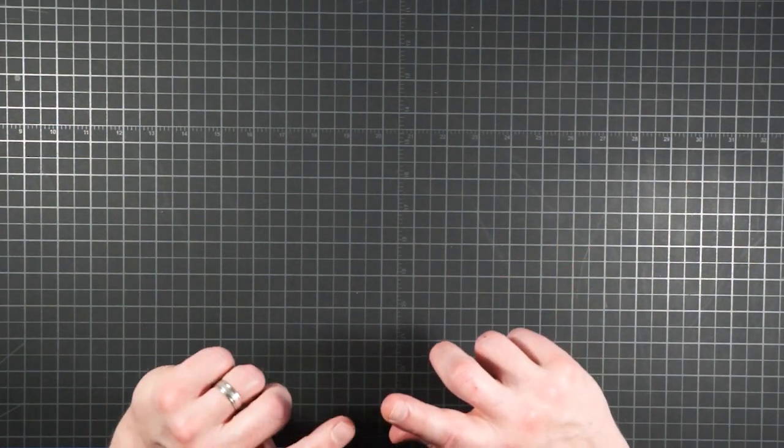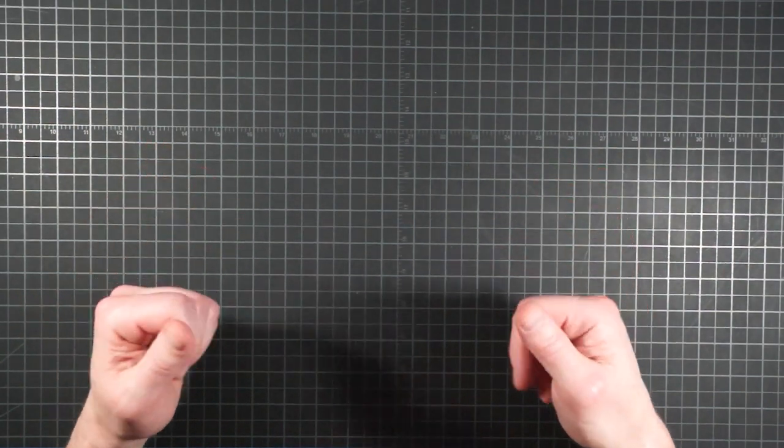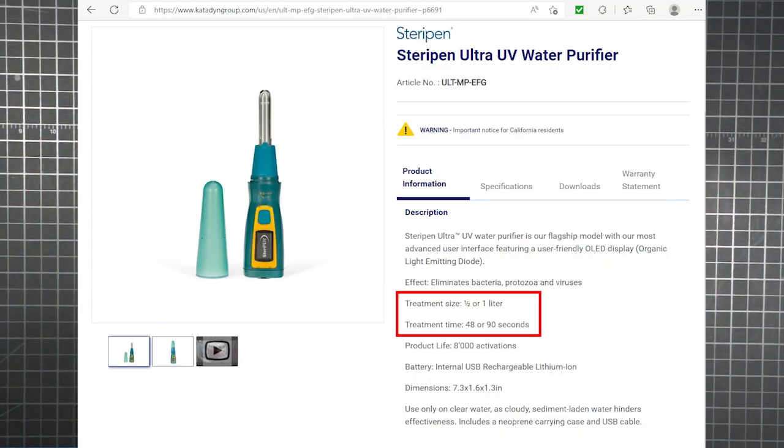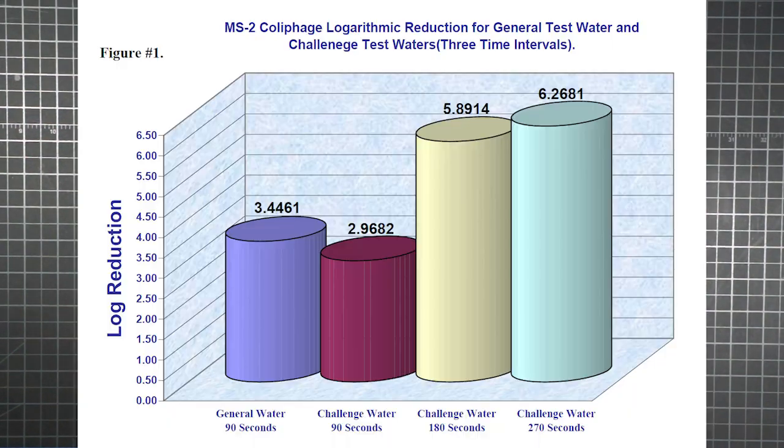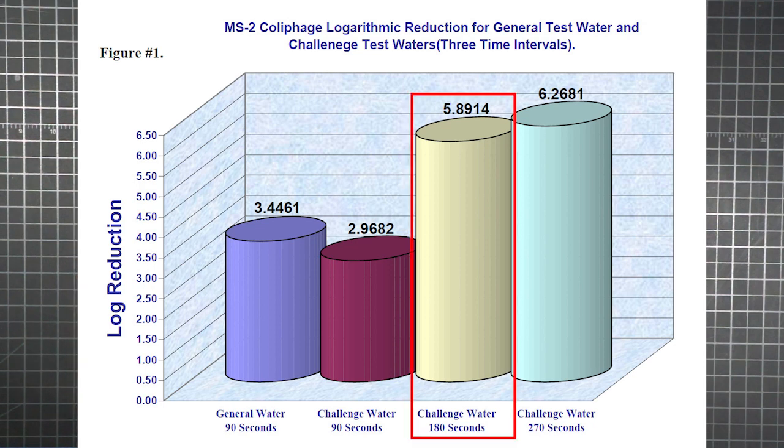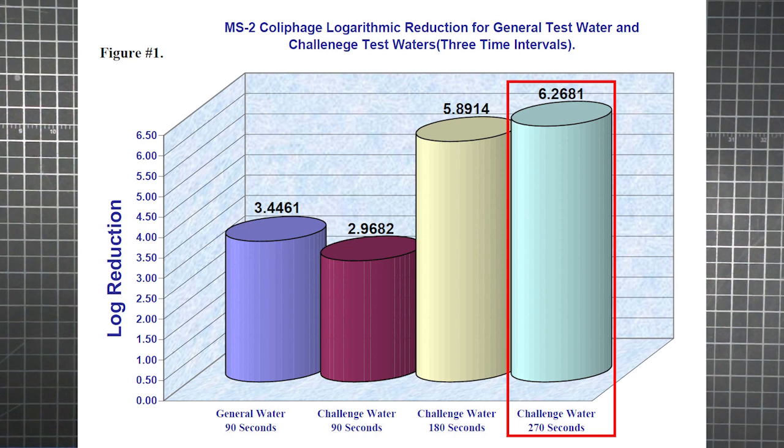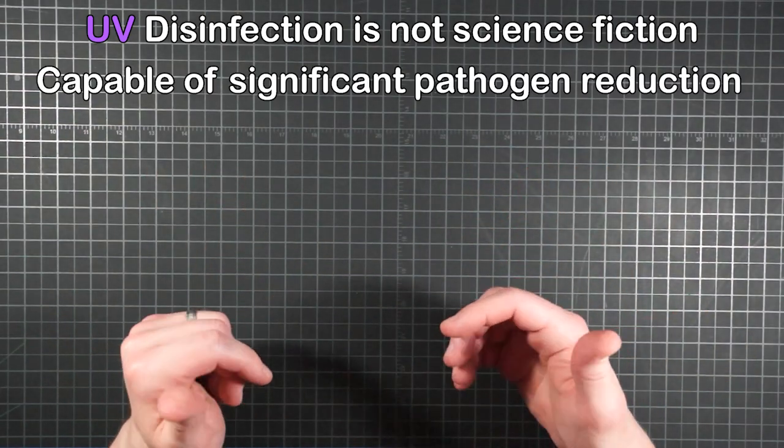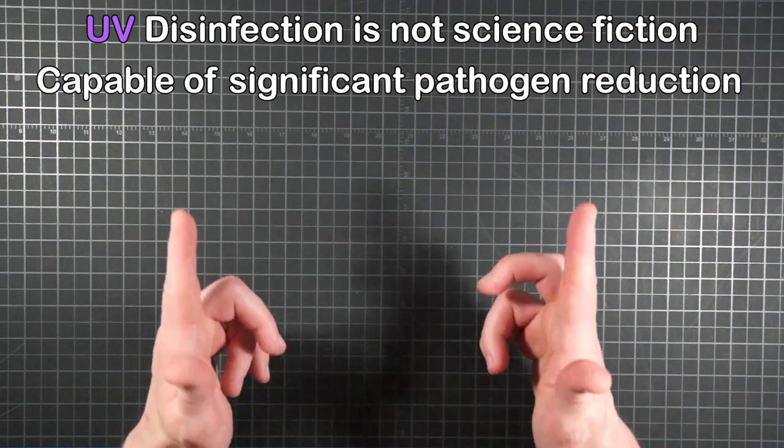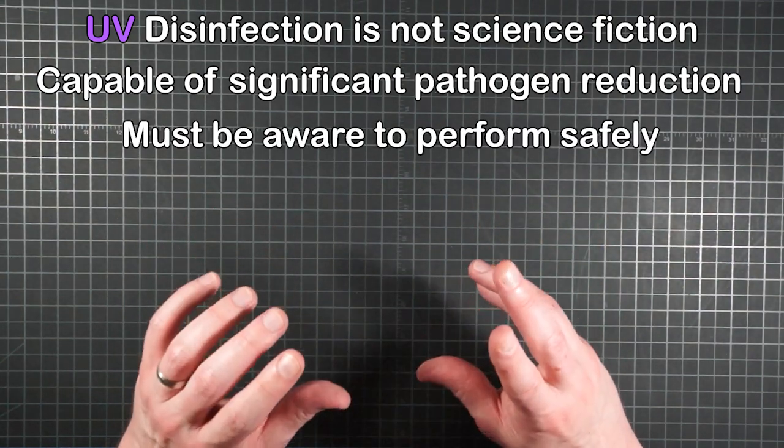Fortunately, there's a fairly easy way to compensate for potentially inadequate reductions. Zap it again. Just because the manufacturer's instructions prescribe one 90 second treatment per liter doesn't mean you can't light it up a second time or even a third. Perhaps recognizing that the results weren't that great, the lab report also shows log reductions for two treatments at 180 seconds of irradiation and for three full cycles with a total of four and a half minutes under the lamp. And as you can see, they were eventually able to exceed six logs of inactivation, even in the murkier challenge water. Though for me so far, the takeaways are UV disinfection is not science fiction. The technology is real and it's capable of significant pathogen reduction when performed appropriately.